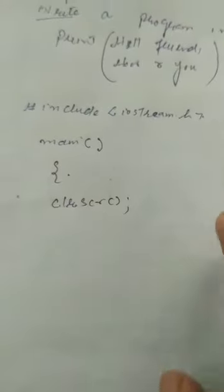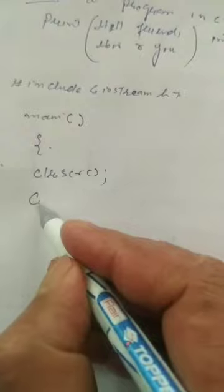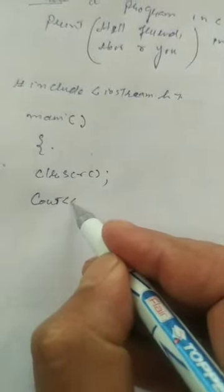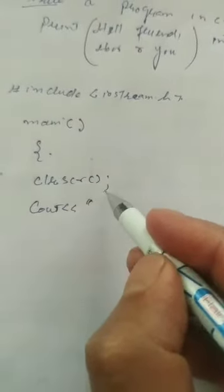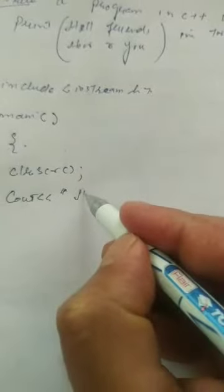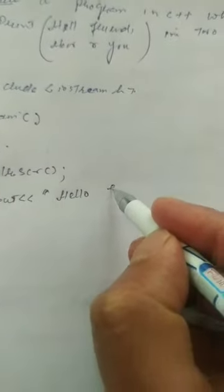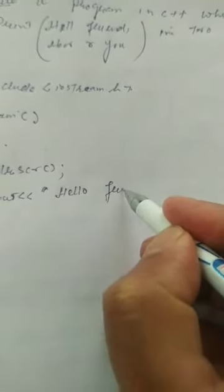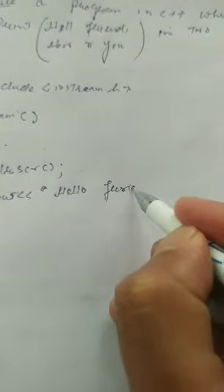First of all, we write the clrscr() function. The job of this function is to clear the screen — whatever is written on your screen will be cleared. So there will be nothing old on your screen when the program runs.